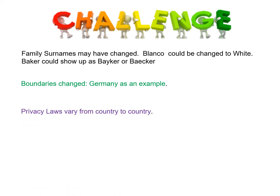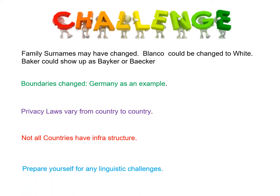Privacy laws vary from country to country. The United States has a 72-year privacy law for census records. Britain has a 100-year privacy law for census records. Not all countries have infrastructure — they may not have census records, for example. So you may have to do a little digging to find out what records were kept and where. Prepare yourself for any linguistic challenges.